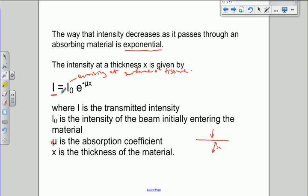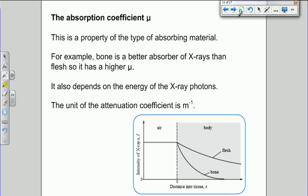So the intensity at any given depth is equal to the initial intensity arriving at the surface of the tissue, multiplied by this factor here. Now, we need to talk in a little bit more depth about the absorption coefficient.